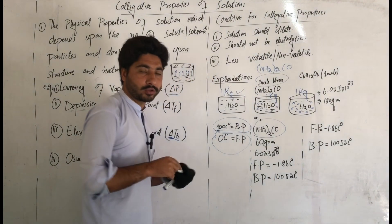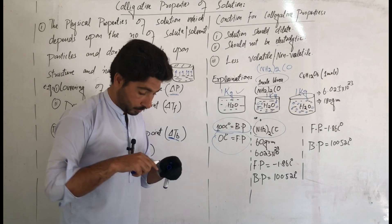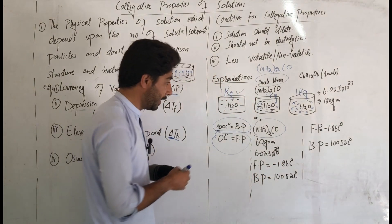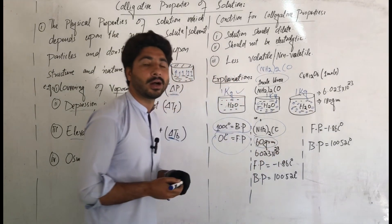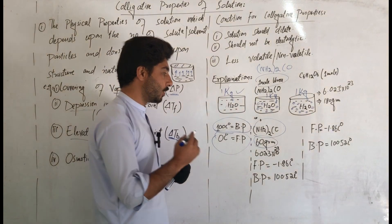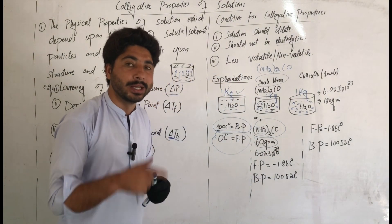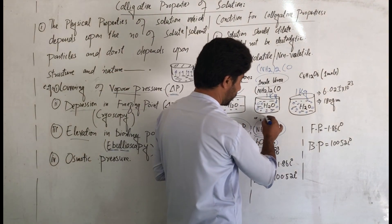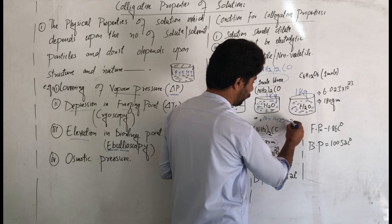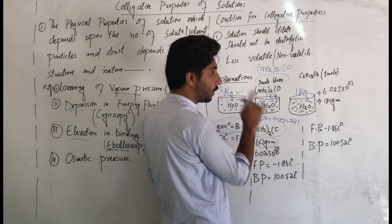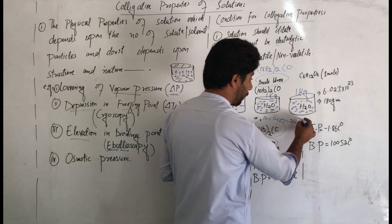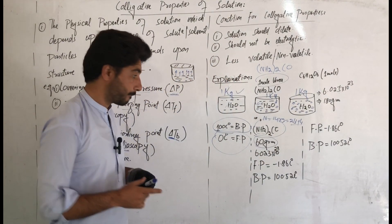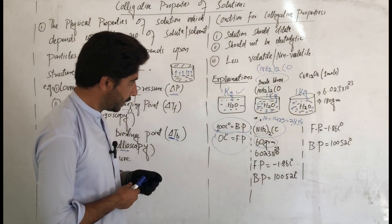We will add one mole of urea. One mole means 6.023 × 10 to the power 23 particles. The molar mass of urea is 60 grams per mole. This is calculated from the atomic masses: nitrogen, hydrogen, carbon, and oxygen — for example, nitrogen atomic mass 14, hydrogen atomic mass 1, giving us 60 grams per mole.